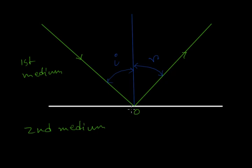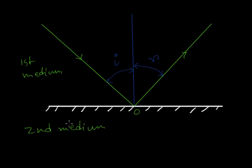Here is a detailed analysis of reflection. Let us consider two mediums with a surface dividing them. Light is incident on the surface dividing the two mediums and gets reflected from the point of striking, going back into the first medium. ON is the perpendicular drawn at the point of incidence on that surface.